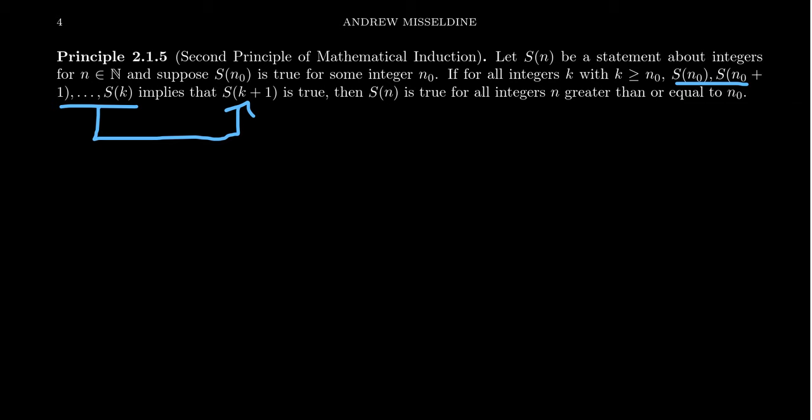Weak induction has weaker assumptions, thus a stronger proof. Strong induction has a stronger assumption, which makes it a weaker proof. So the names honestly seem a little backwards to me, but honestly, I myself don't use the names too much because strong induction is mathematically, is logically equivalent to weak induction.